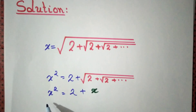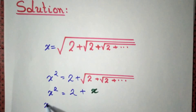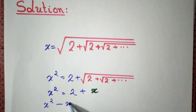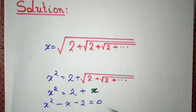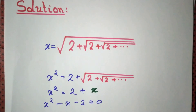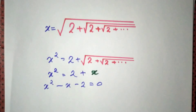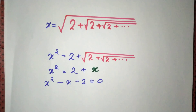We can take everything to the left hand side, so we have x squared minus x minus 2 equal to 0. This is a quadratic equation and we know how to solve it.